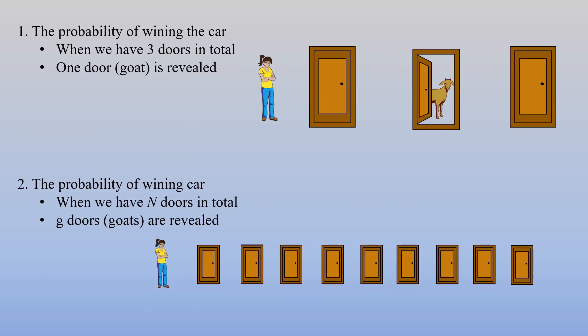In summary, we have two questions. In the first question, we have three doors and one goat is revealed. And in the second question, we have N doors in total and G doors are revealed. What are the probability of winning by switching the door from the first chosen door to one of the remaining doors? Think about it. I will give you the answer in the rest of the video.